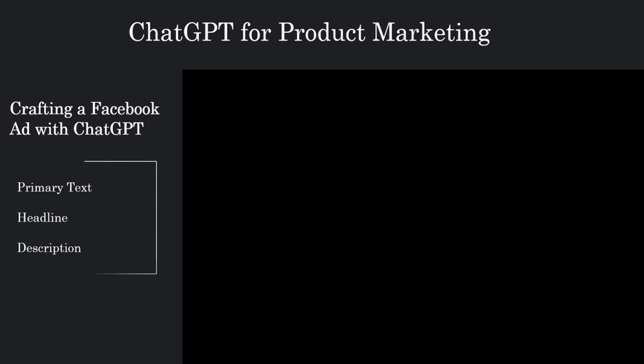For ChatGPT to generate the primary text and description, you need to provide certain information to ChatGPT. First is the list of keywords — list specific words or phrases that must be included in the ad copy. This ensures that the core concepts of the product or service are highlighted.